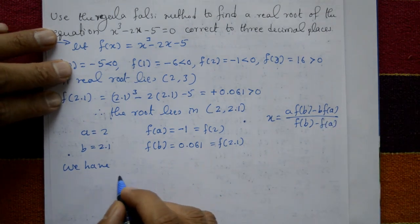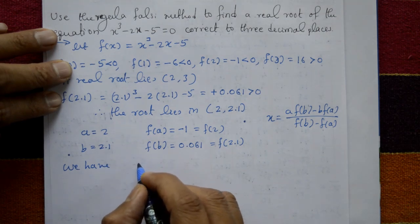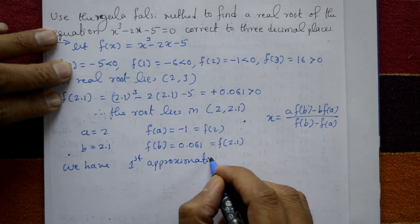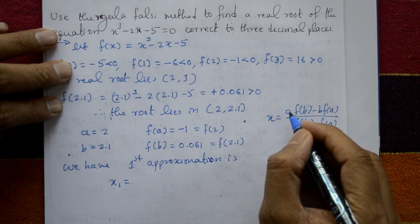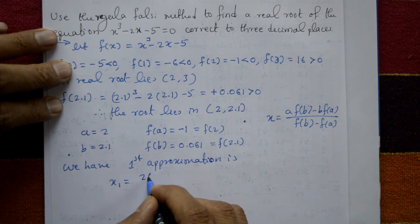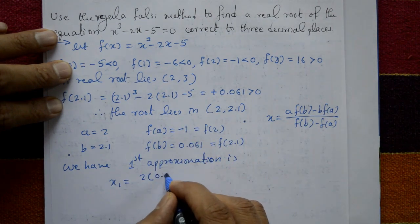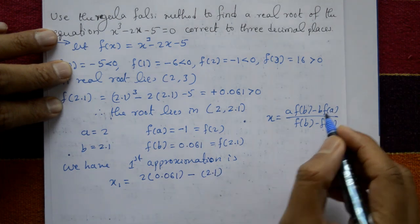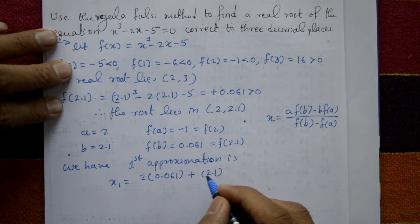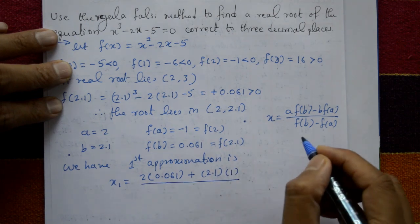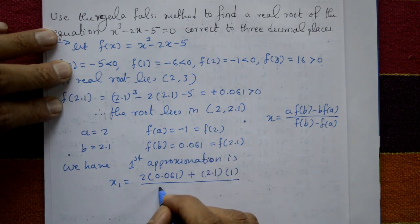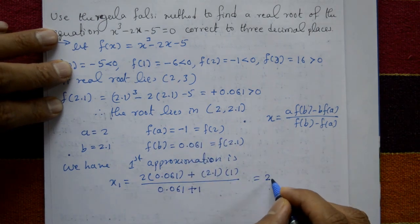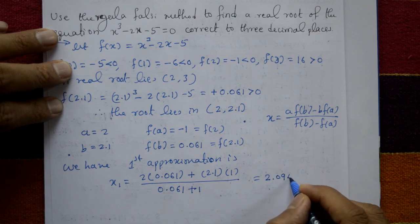The first approximation is x1 equal to 2 into 0.061 minus 2.1 into (minus 1), all divided by 0.061 minus (minus 1), which equals 0.061 plus 1. This gives x1 equal to 2.0942.